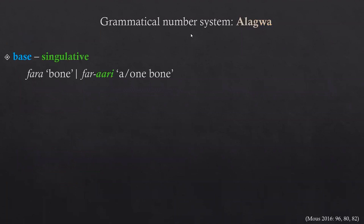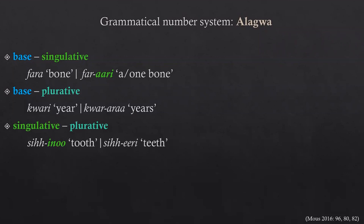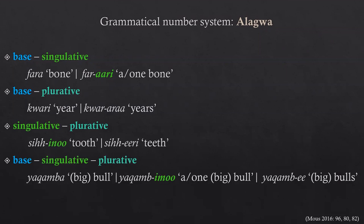Another quick example from Alagwa, another South Cushitic language. We have base and singulative: fara 'bone', parari 'one bone'. Base and plurative: quari 'ear', quarara 'ears'. Then singulative and plurative: sighino 'tooth', sigheri 'teeth'. And the full paradigm with base, singulative, and plurative: yakamba 'big bull', yakambimo — where bimo is the singulative marker — meaning 'one big bull', and yakambe 'big bulls'.